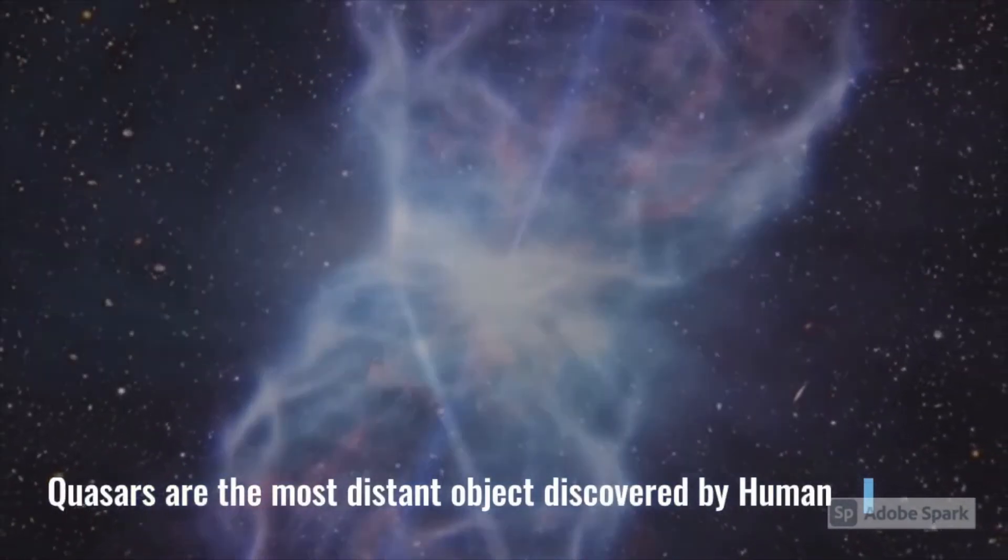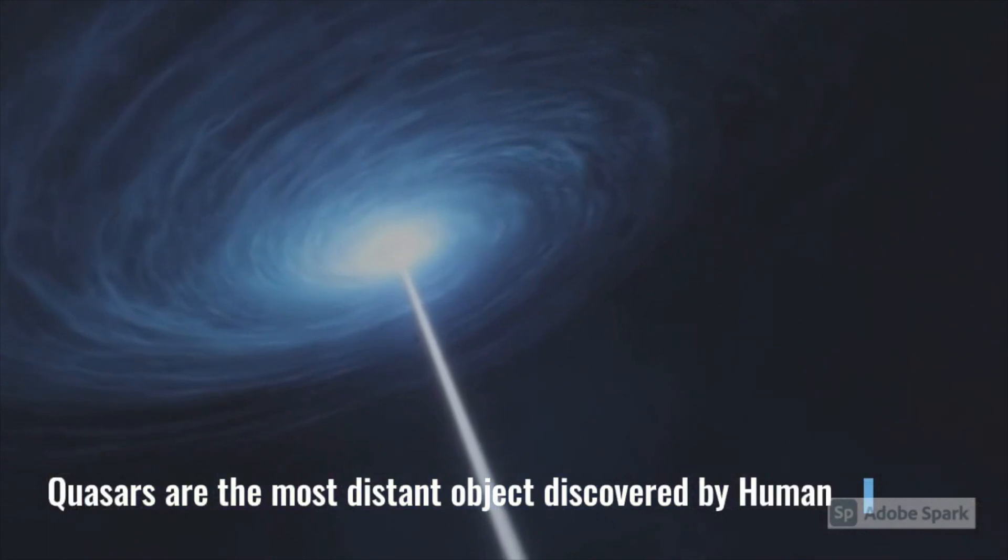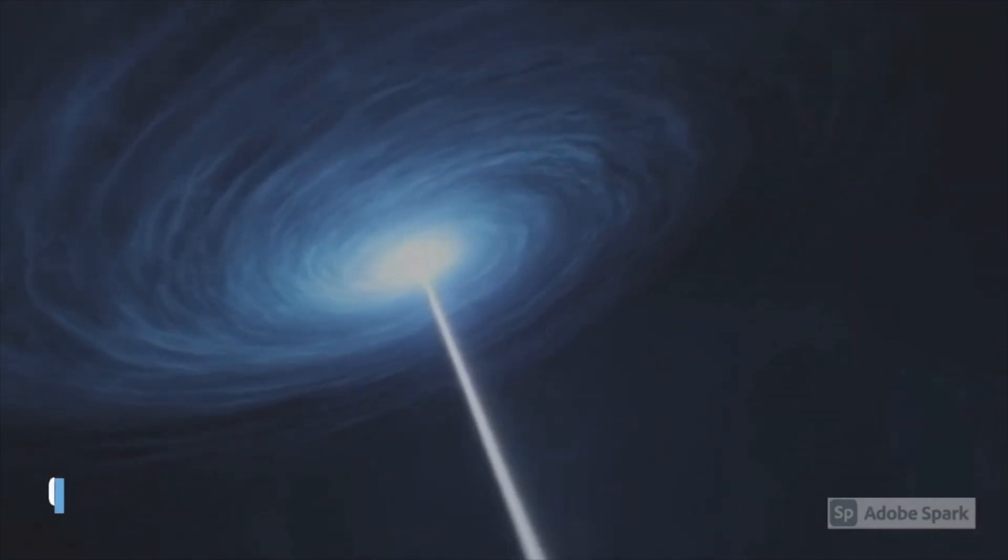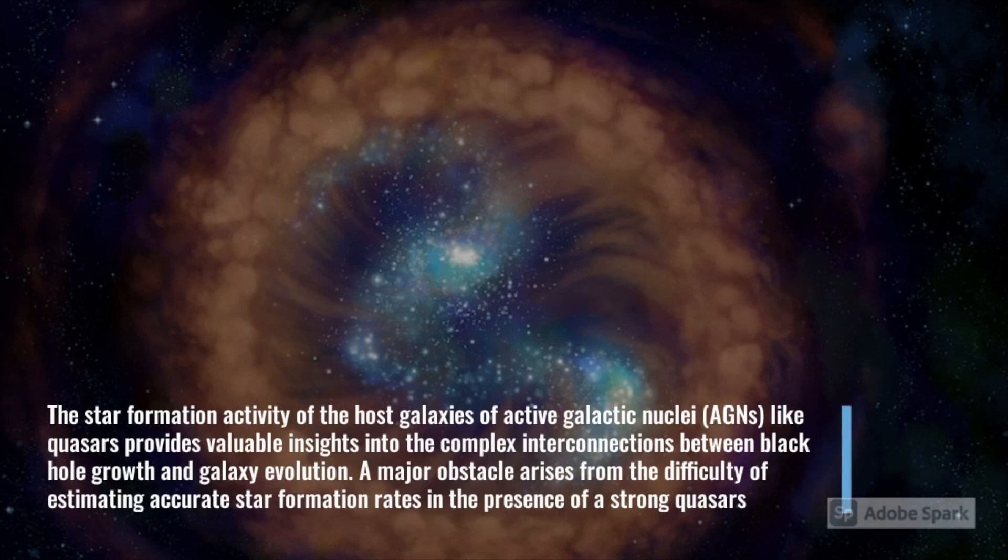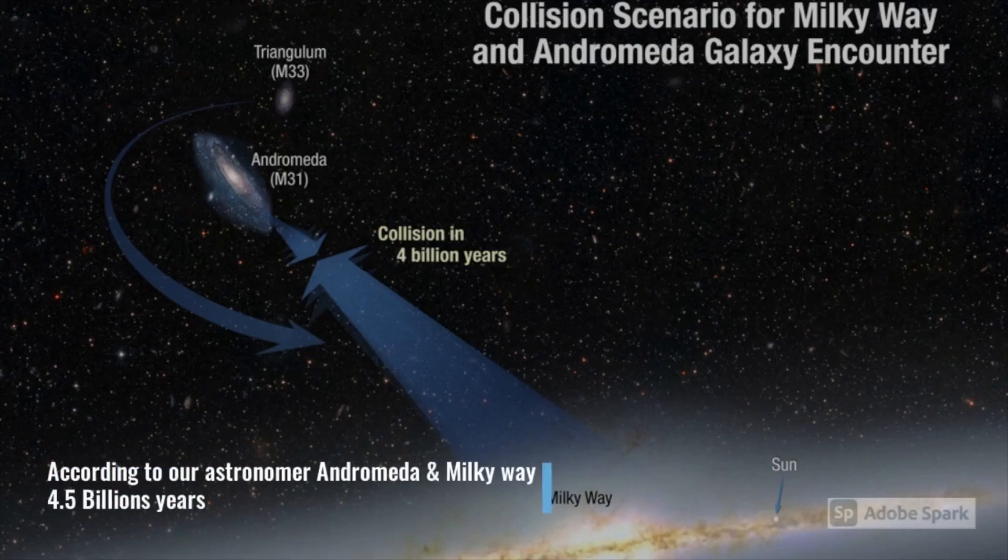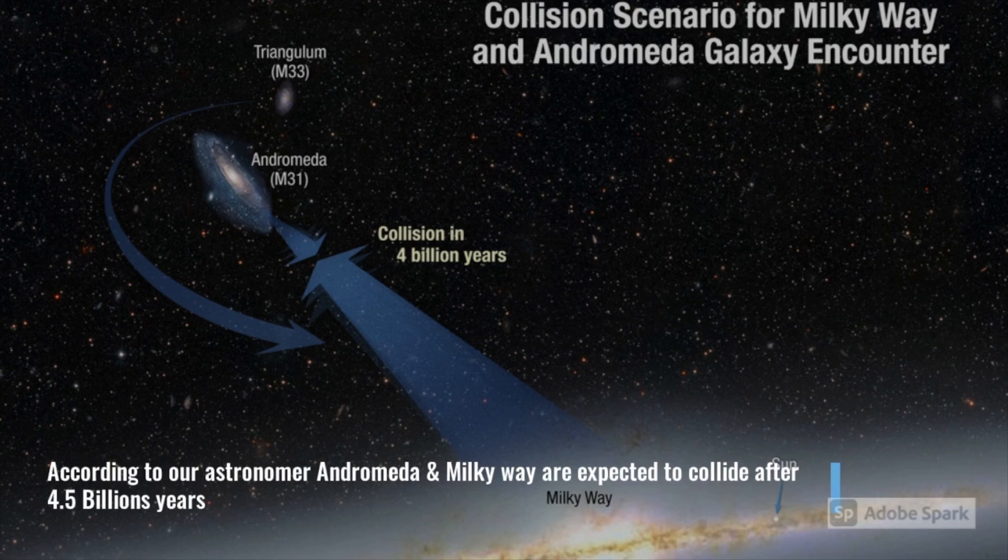Most of the discovered quasars are billions of light years away from us. This makes them the most distant objects to be discovered by humans. Quasars played a great role in shaping the universe. They decreased active star formation by heating up the gases. As hot gas cannot collapse and form new stars, it is one of the possibilities that when Andromeda and Milky Way galaxies collide, the supermassive black holes will merge and create a new quasar.